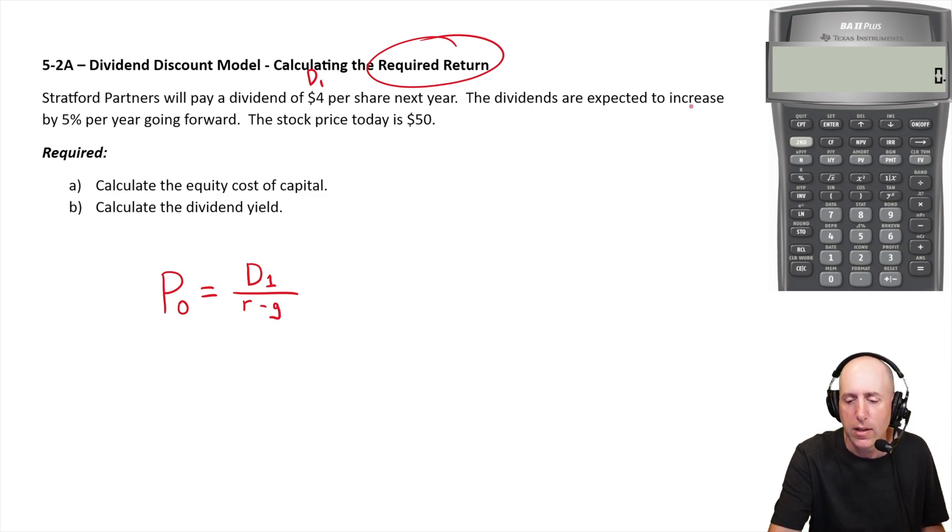This is D one. The dividends are expected to increase by 5% per year going forward. That is G, and the stock price today is $50. That's P naught or P at time zero.